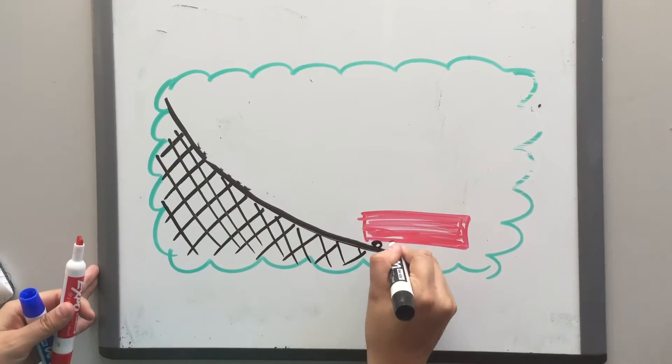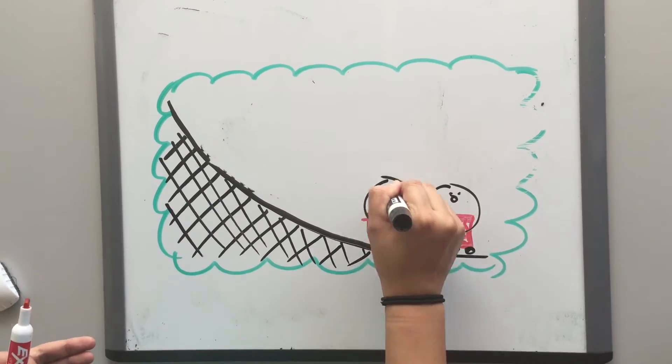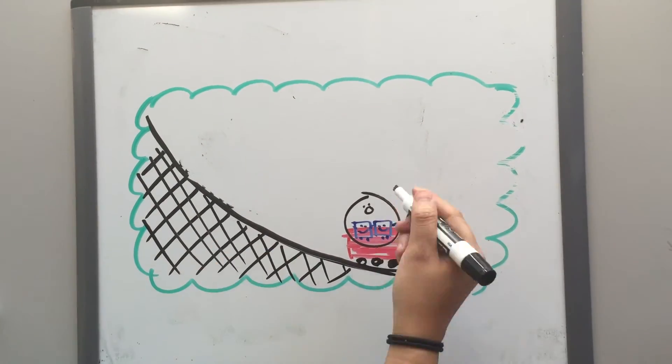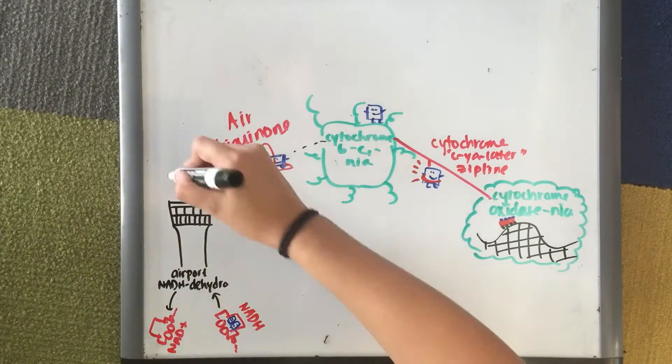The four electrons, four stars, and the molecular oxygen are used to form two water molecules. The other four stars are pumped into space. Now let's zoom out.